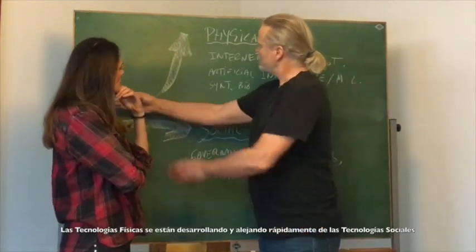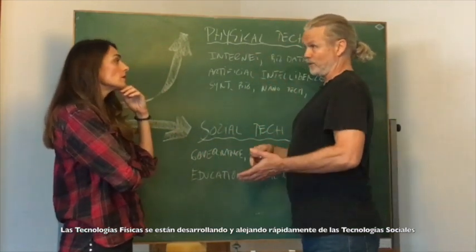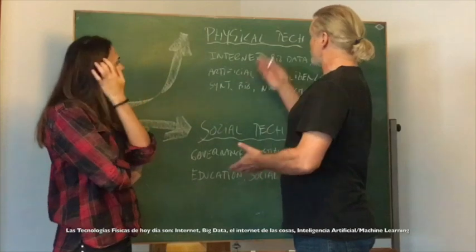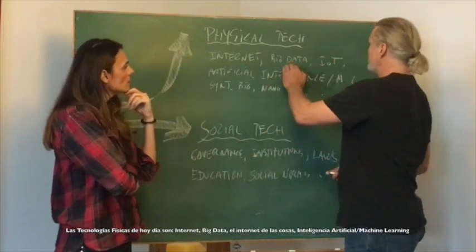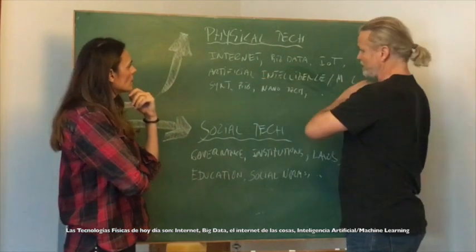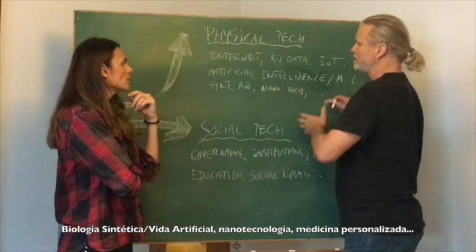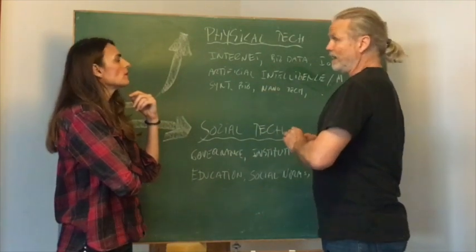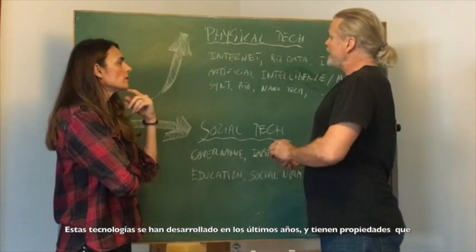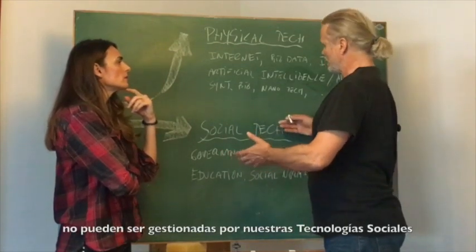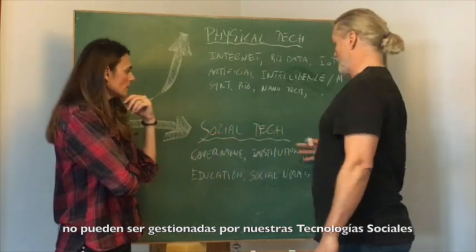The physical technologies are rapidly developing away from our social technologies. The modern physical technologies today are the internet, big data, the internet of things, artificial intelligence, machine learning, synthetic biology, artificial life, nanotechnology, and personal medicine. These are technologies developed in recent years and they have properties that cannot be dealt with in our social technologies.